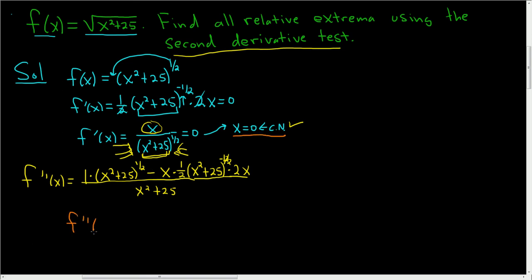So f double prime of zero. This is zero plus 25, so it's 25 to the one-half minus, well, x is zero, so there's zeros here, and zero times any number is zero, so all of this is just zero. So you get zero, and on the bottom you get zero plus 25.